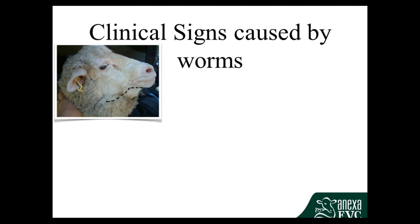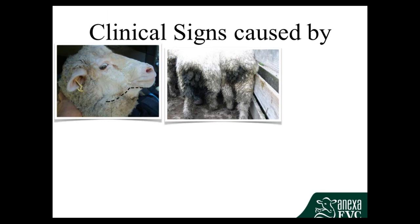Here are a couple of very daggy sheep with diarrhoea — the most likely cause would be worms. Normal faecal matter in a sheep should be very firm little pellets. If you've got faecal staining like this there's definitely something going on. The first step should be giving them a drench. If they don't respond to that, get a vet out to determine if it's an infection or something else.